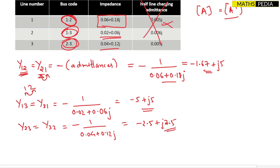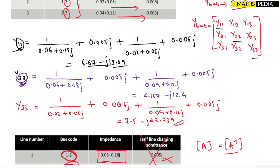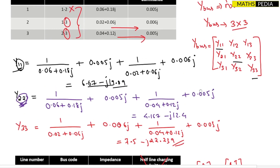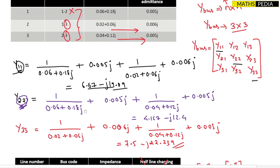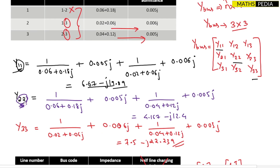Now we have found all the values and just need to place them into the Y-bus matrix to get the final answer. This is how you can directly write Y-bus from the table. For MCQ questions, if you need to find, say, y22, there is no need to draw a diagram — you can write the values directly from the table.